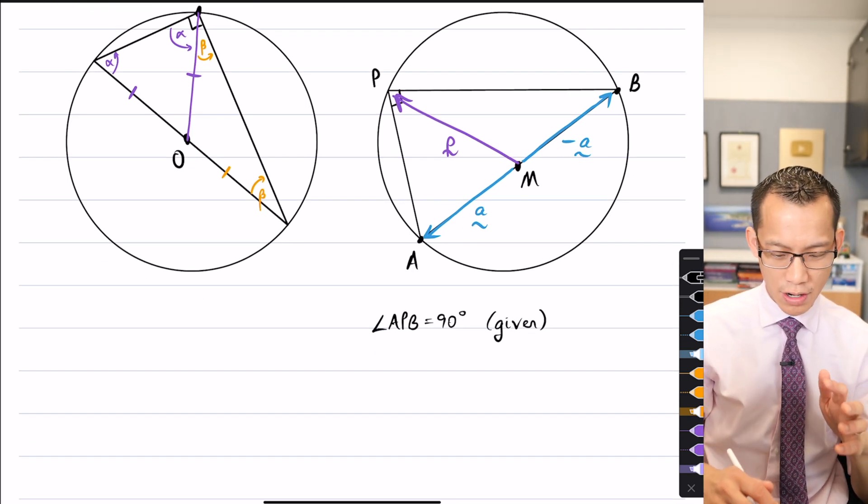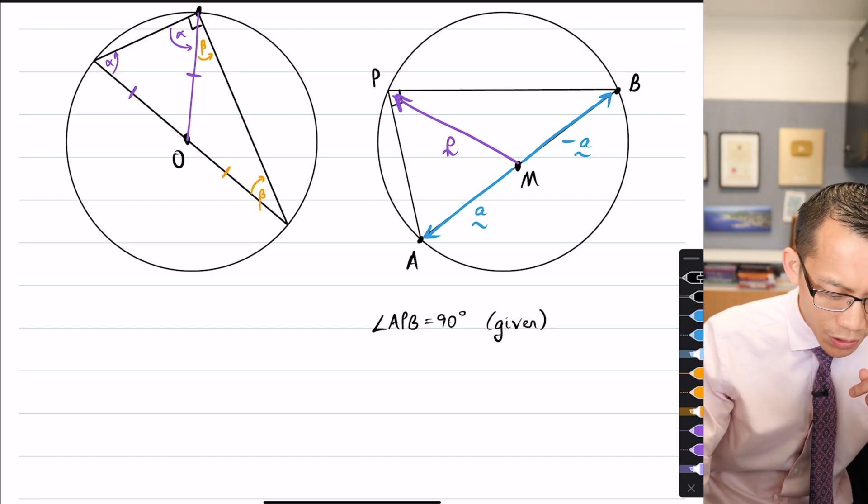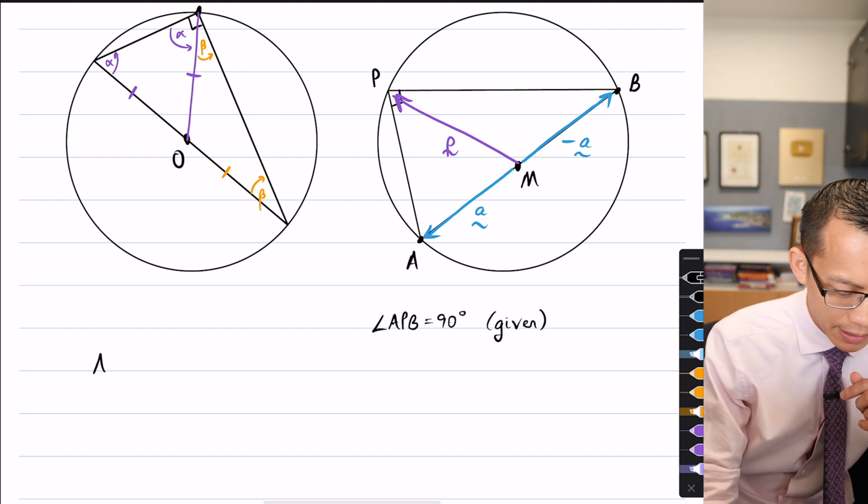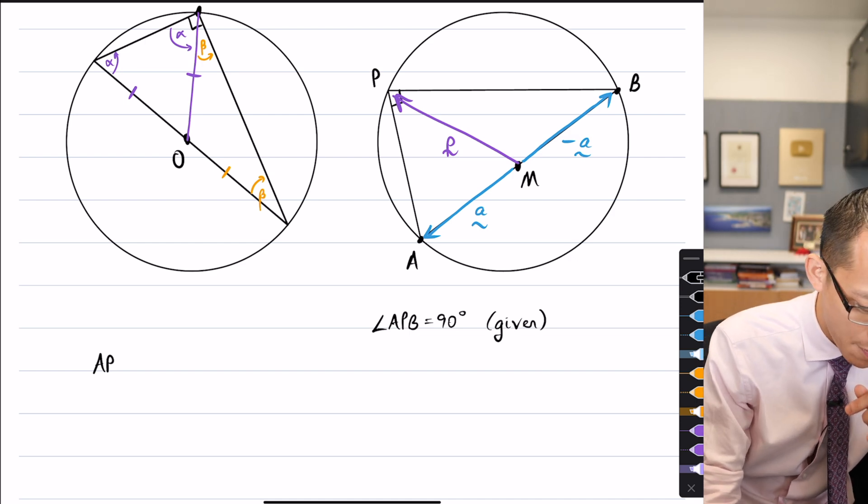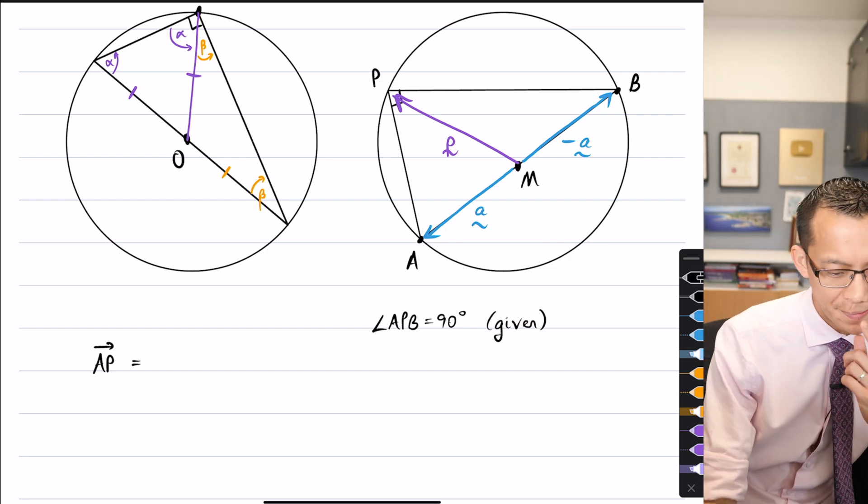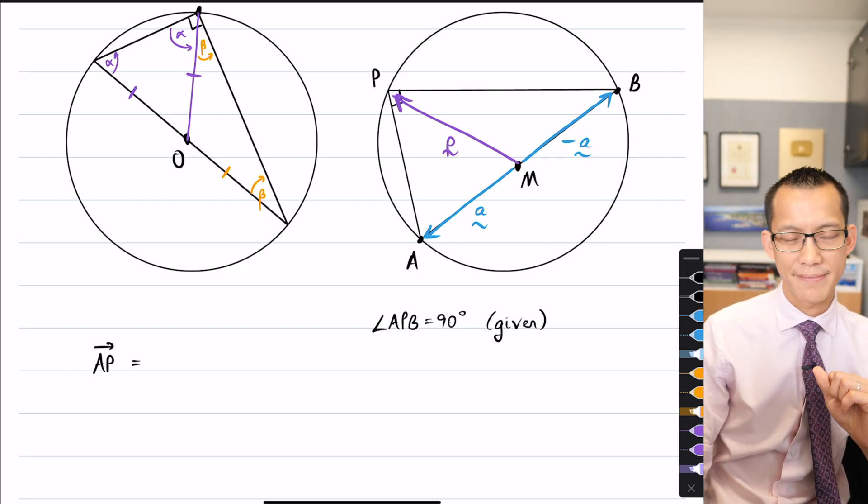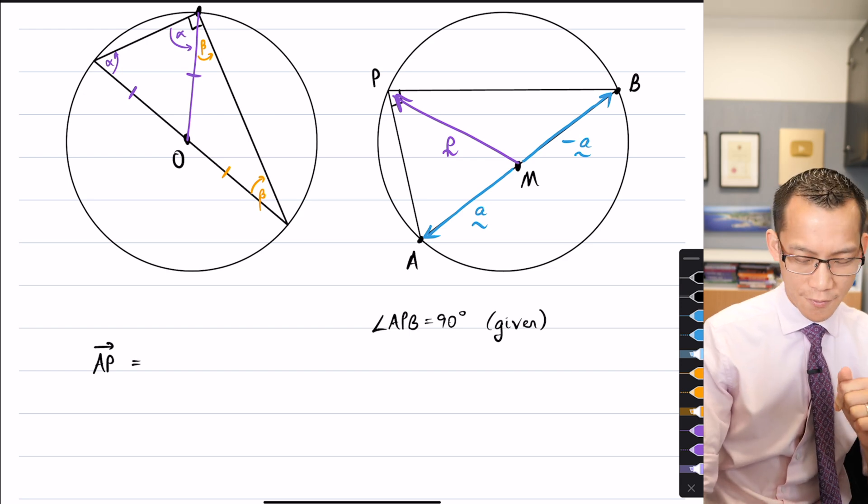In terms of all of the vectors that I've just got here, a, negative a, and p, how would I get from a to p? Which vectors would I string together? Have a think about it. Negative a and p, or the negative of a. Fantastic.